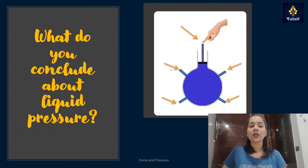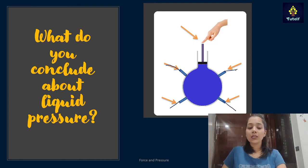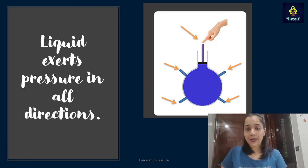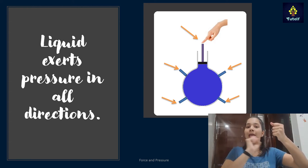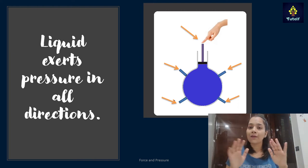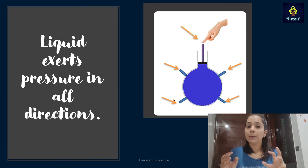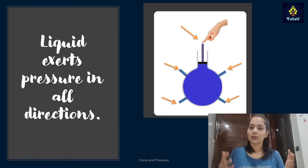Next, there is a flask with four openings and a person exerting force from the top. Water comes out from all the openings, confirming that liquid exerts pressure in all directions — as seen in the simulation. For a hands-on activity, you can take a balloon, fill it with water, and punch a few holes in it. Water will come out from each and every hole, showing that the water inside exerts force in all directions.